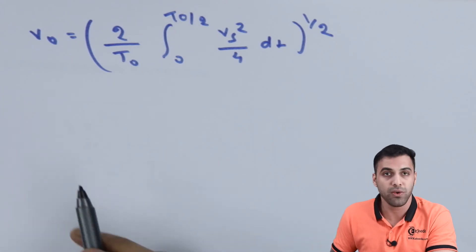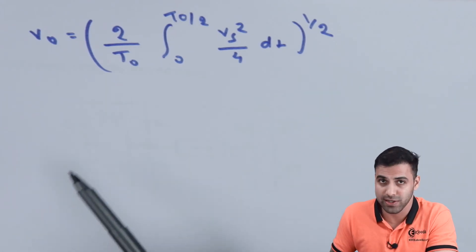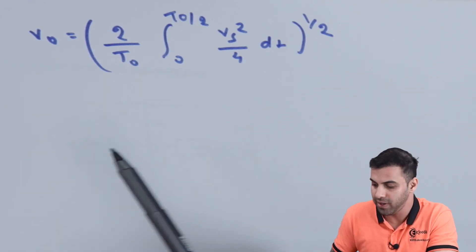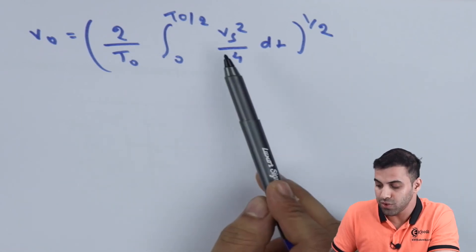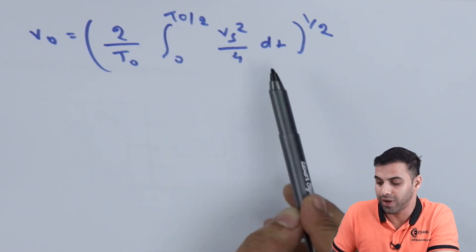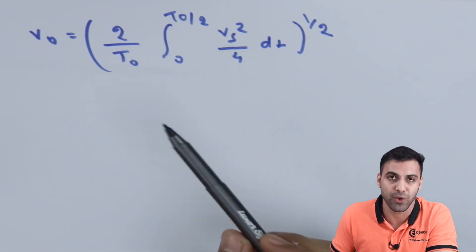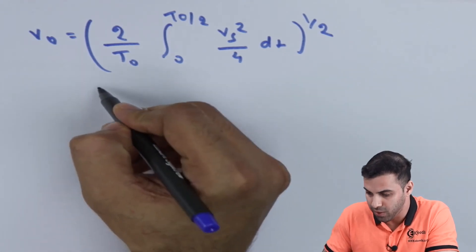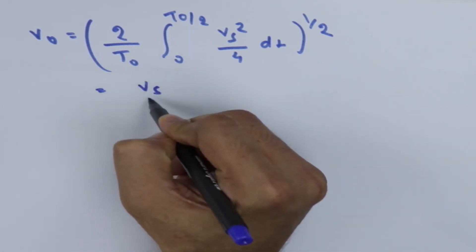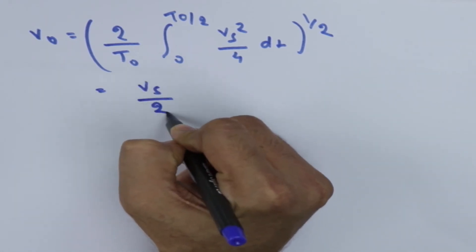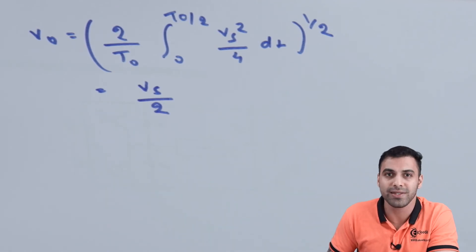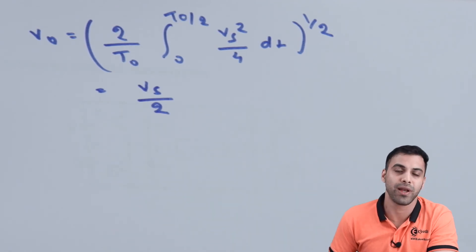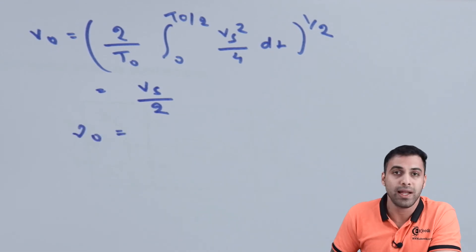Now let's calculate one more parameter. The RMS output voltage is given by the square root of: (2 / T0) times the integral from 0 to T0/2 of (Vs² / 4) dt. This evaluates to half of the source voltage, Vs/2, as we saw in the earlier waveform.